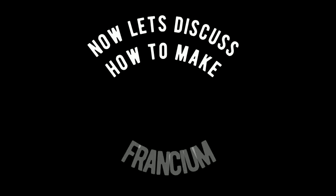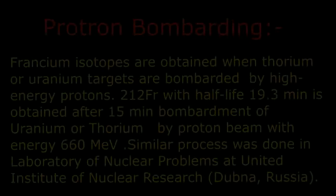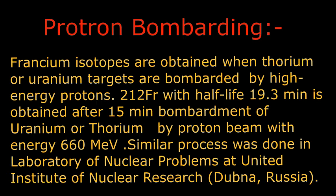Now let's discuss how to make francium. One method of creating francium is proton bombarding. Francium isotopes are obtained when thorium or uranium targets are bombarded by high energy protons. Francium-212 with half-life 19.3 minutes is obtained after 15 minute bombardment of uranium or thorium by a proton beam with energy 660 MeV.